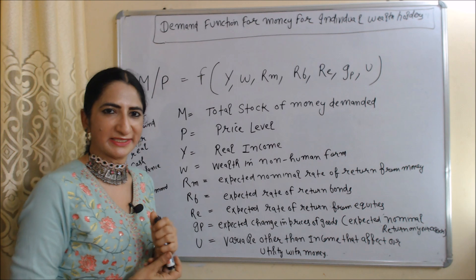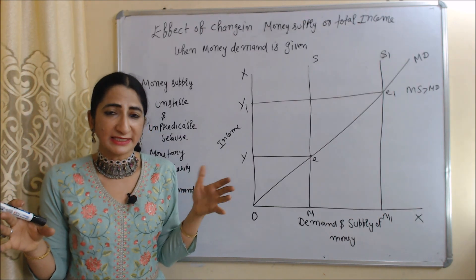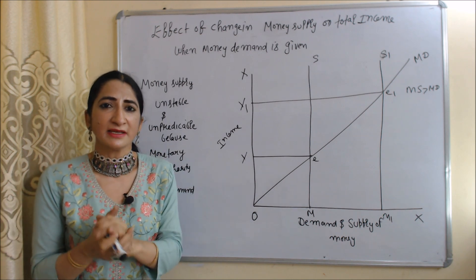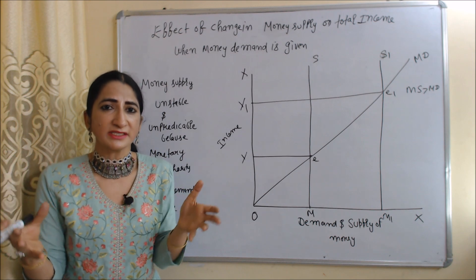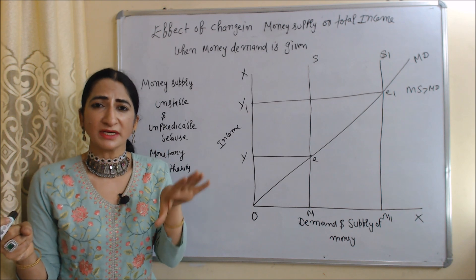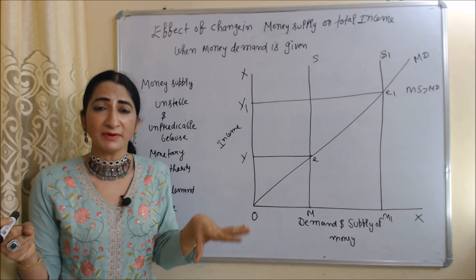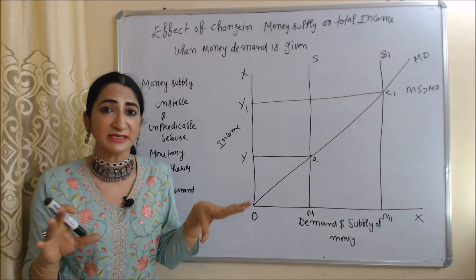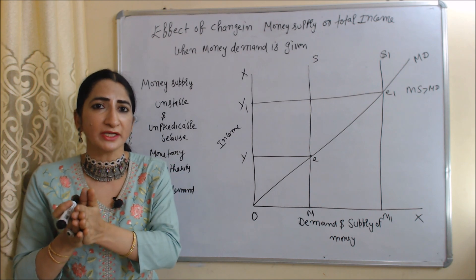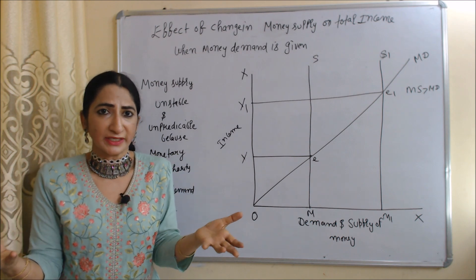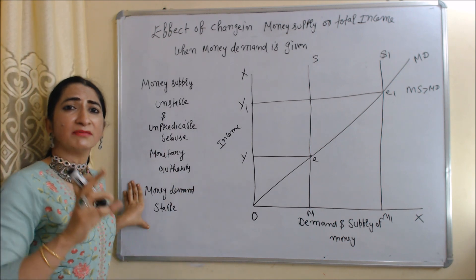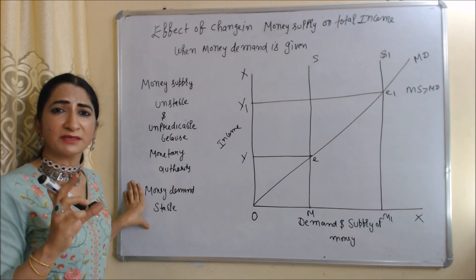Now we will see how money supply can affect our national income when money demand is given — that is, at a constant demand, how money supply affects national income. In this theory, we assume money supply is very unpredictable and unstable; we cannot easily predict it because money supply is decided by monetary authority, for example the Reserve Bank of India. On the other hand, money demand is very stable and predictable.